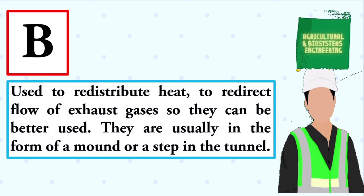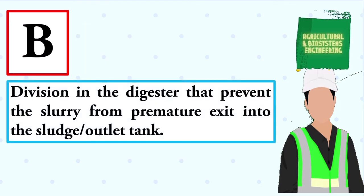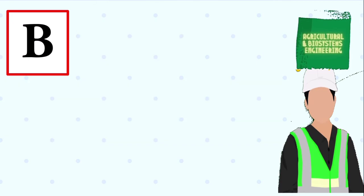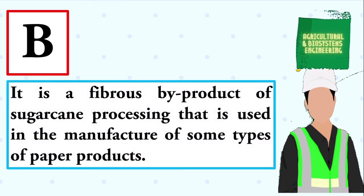Used to redistribute heat or redirect flow of exhaust gases so they can be better used; usually in the form of a mound or a step in the tunnel. The answer is: baffle division. Division in the digester that prevents the slurry from premature exit into the sludge or outlet tank. The answer is: baffle board. It is a fibrous byproduct of sugarcane processing used in the manufacture of some types of paper products. The answer is: bagasse.